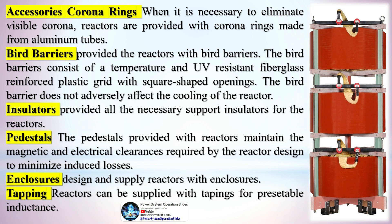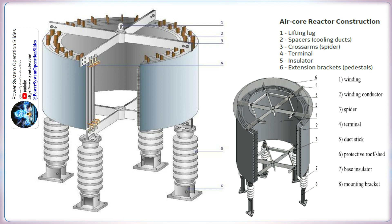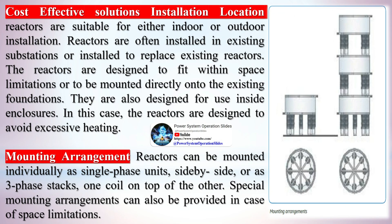Accessories: corona rings — when it is necessary to eliminate visible corona, reactors are provided with corona rings made from aluminum tubes. Bird barriers — reactors can be provided with bird barriers consisting of a temperature and UV-resistant fiberglass-reinforced plastic grid with square-shaped openings, which do not adversely affect cooling. Insulators provide all necessary support for the reactors. Pedestals maintain the magnetic and electrical clearances required by the reactor design to minimize induced losses. Enclosures can be designed and supplied, and tapping allows pre-settable inductance.